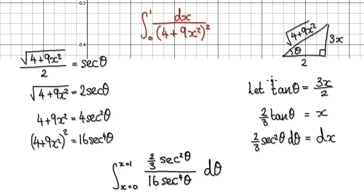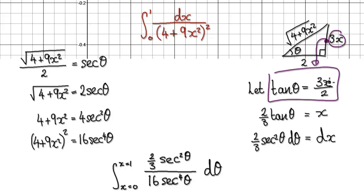So now you let tan θ — tan is like this — it will be 3x over 2. So tan θ = 3x/2.